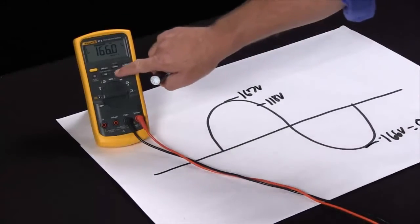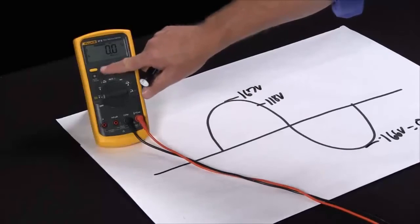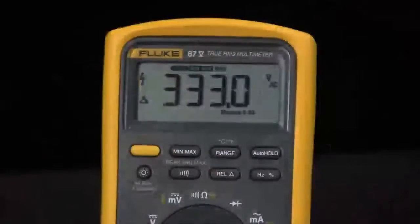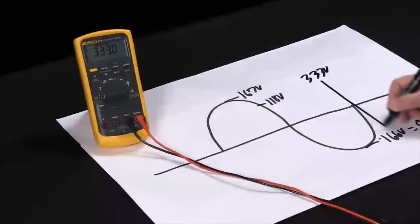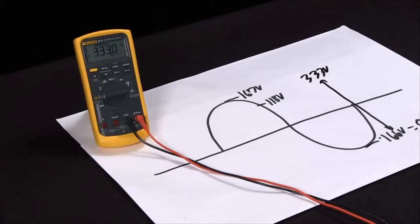So if I hit relative, that becomes zero, and now I'm measuring the peak to peak of 330 volts of this sine wave by using a combination of the fast min max and the relative mode.